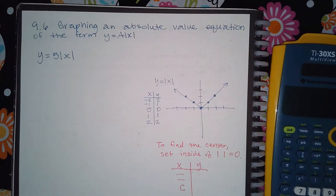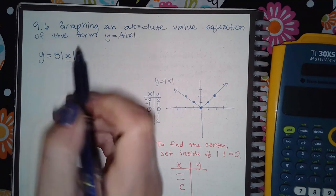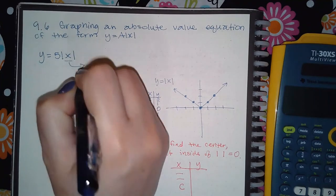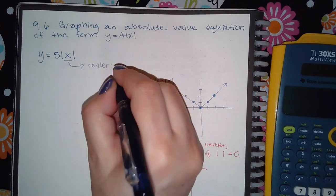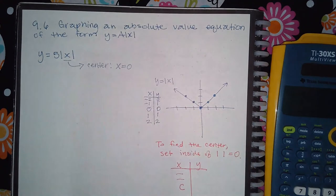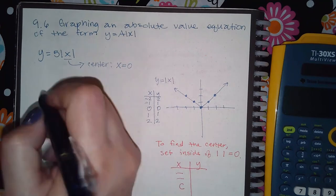So for this particular problem, if I want to follow all of these steps, the first thing I need to do is take what is inside the absolute value and set it equal to zero. So in this case, I'm going to be setting x equal to zero. Now there's nothing to solve for here, so I know that the center is going to be zero.